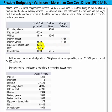Equipment depreciation is fixed at $2.75. Rent is also fixed at $1,830. And there is a miscellaneous cost that they've broken into mixed components: $820 being fixed and $0.15 as a cost per pizza.